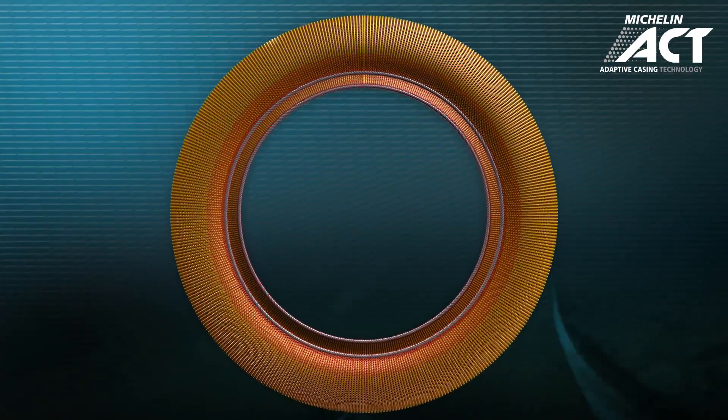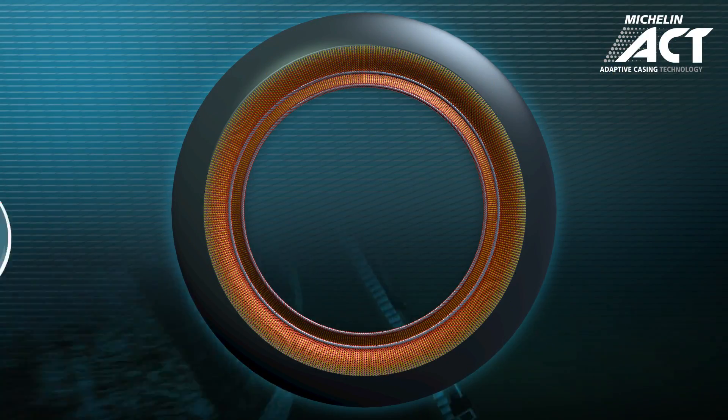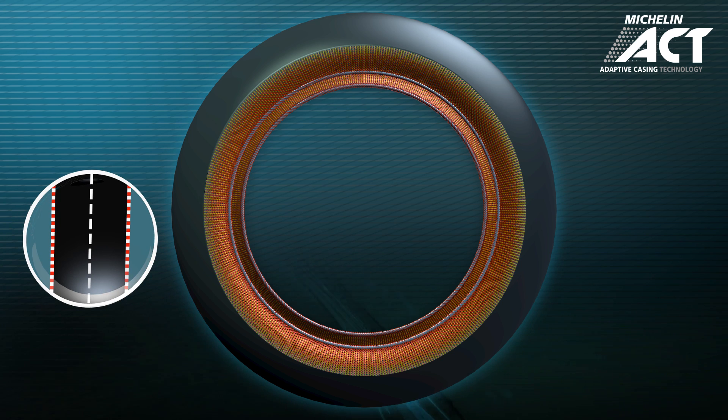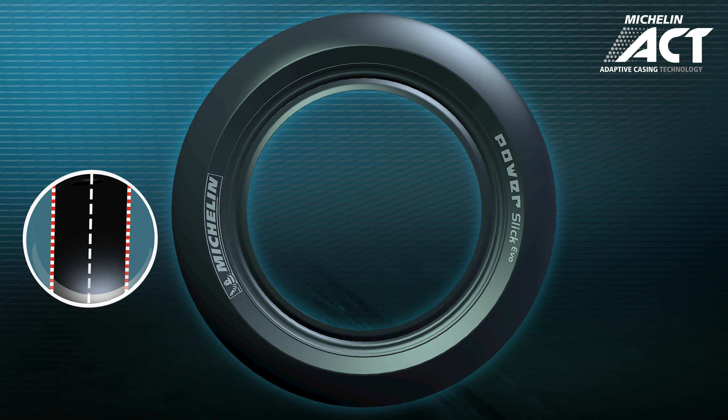Taking the tyre as a whole, the low rigidity crown serves to provide straight line stability at high speeds, while the more rigid sidewalls favour cornering stability.